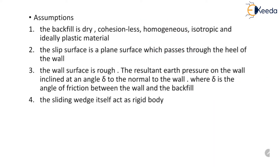To prove his theory, Coulomb made some assumptions. The first assumption is the backfill is dry, cohesionless, homogeneous, isotropic, and ideally plastic material. Initially, this theory is limited to dry and cohesionless soil.